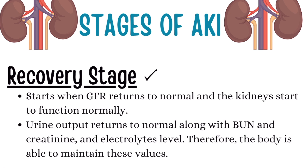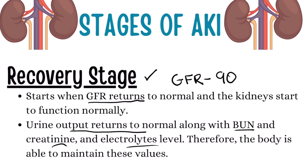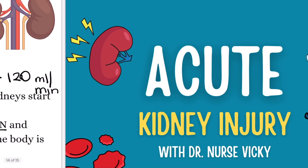Lastly, we are in the recovery phase. The first phase is initiation, then we move to oliguric — decrease in urine. Then diuresis — an increase in urine production. And lastly, when we are able to treat these phases, we end up in the recovery phase. In this phase, everything starts to be normal. The GFR returns to normal — that is between 90 to 120 ml per minute. The kidneys start to function normally, urine output returns to normal levels, and BUN, creatinine, and electrolytes all normalize.